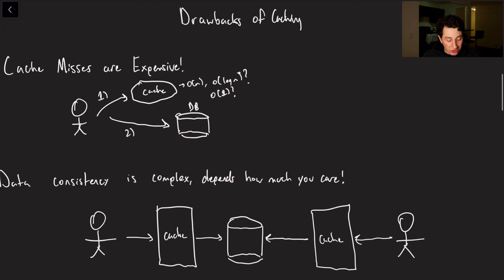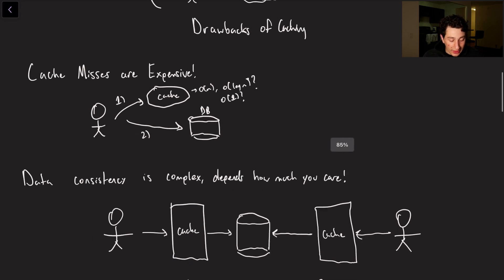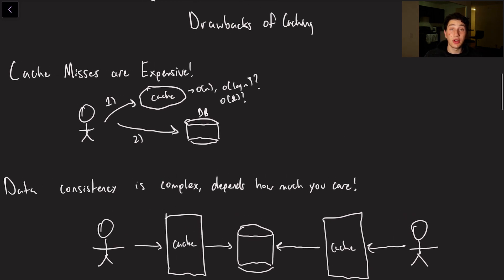So I've gone over the benefits of caching but of course just like everything else in systems design there are trade-offs. And so what are the drawbacks that we experience? Well for one cache misses are super expensive, they're going to slow us down quite considerably.